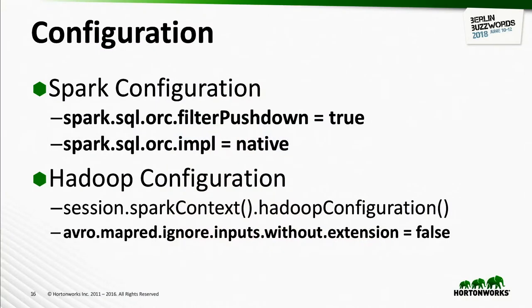A couple of important configurations: ORC predicate pushdown is turned off by default in Spark, so you need to set it to true. Dongjun's native ORC work hasn't been set as the default yet either, so you need to set native equal to true; otherwise you get the older implementation going through Hive input format. Finally, to get Avro to work, you need to set a config in the associated Hadoop config — not the Spark config — to tell the Avro reader not to ignore files that don't end in .avro.